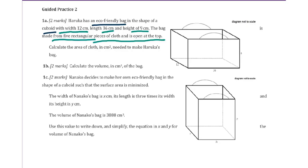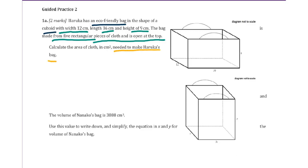Calculate the area of cloth in centimeters squared needed to make Haruka's bag. So the area of the cloth equals, look at the bottom, we have 12 times 36. On the front side, that will be plus 36 times 9. We have front and back, so we multiply by 2.